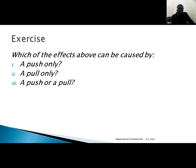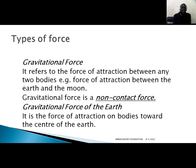Moving on, let us look at the various types of forces — we have around eleven of them. Number one: gravitational force. It refers to the force of attraction between any two bodies, for example between the Earth and the Moon. Another example is when you throw a stone upwards — the stone is one object, the Earth is another, and they attract each other. A force of attraction between two bodies is known as the gravitational force.